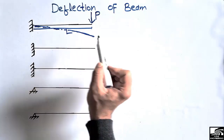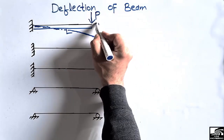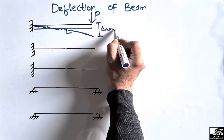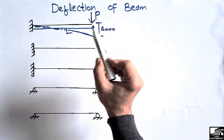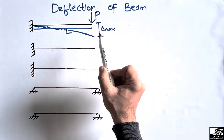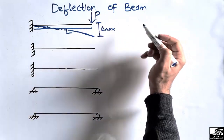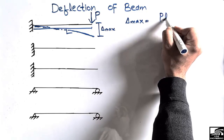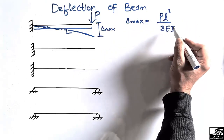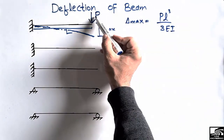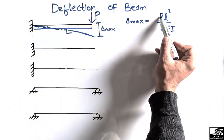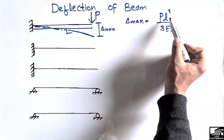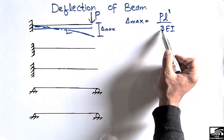The beam deflects as shown by the dotted line, and the maximum deflection will be at the free end, because there is no support there. So the maximum deflection, delta_max, for a cantilever beam with a concentrated load acting only at the free end is: δ_max = PL³ / 3EI. Here, P is the load acting on the beam, and L is the total length of the cantilever beam.